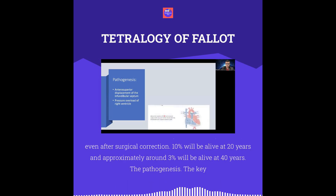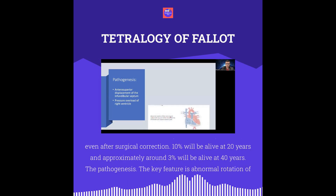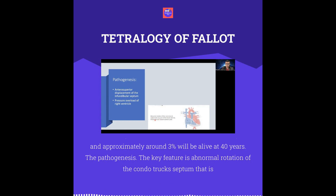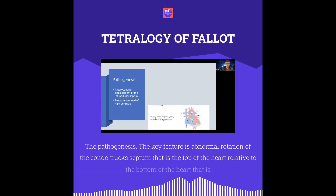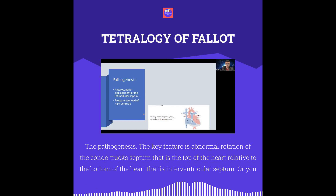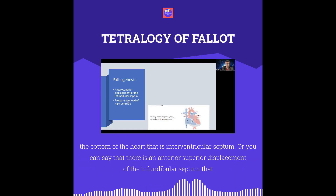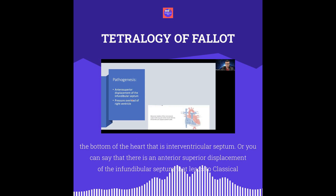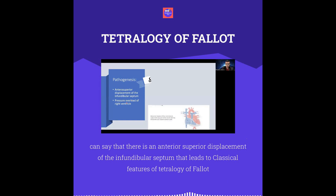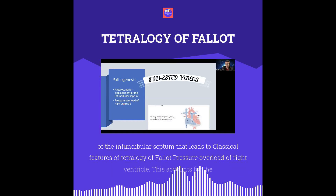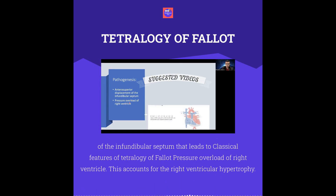The pathogenesis involves abnormal rotation of the conotruncal septum — that is, the top of the heart — relative to the interventricular septum at the bottom. Alternatively stated, there is anterior superior displacement of the infundibular septum, which leads to the classical features of Tetralogy of Fallot. Pressure overload of the right ventricle accounts for the right ventricular hypertrophy.